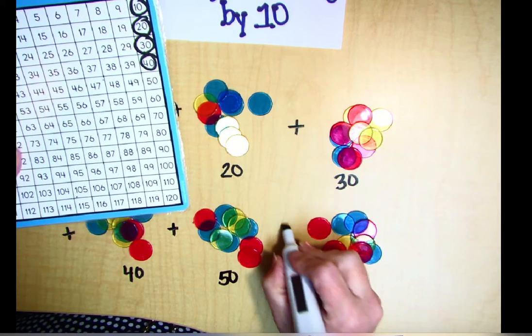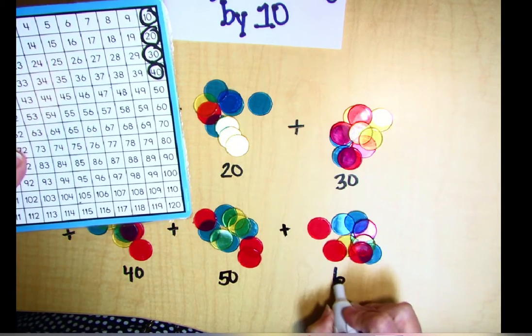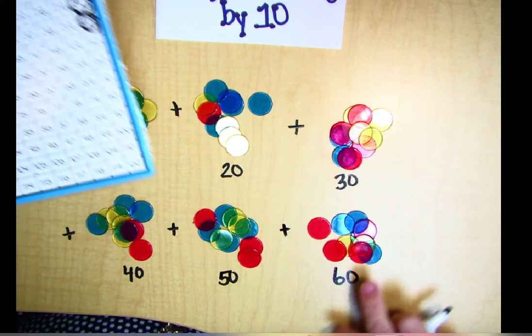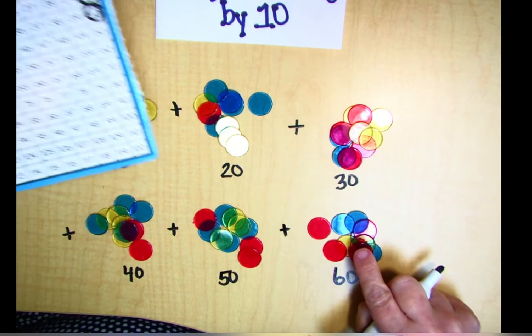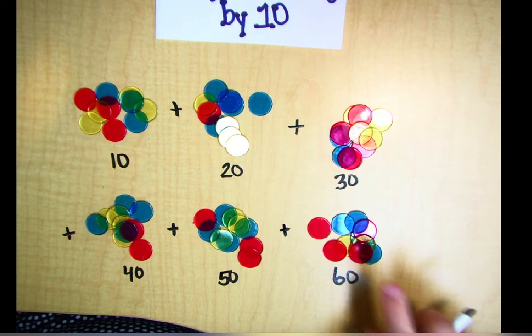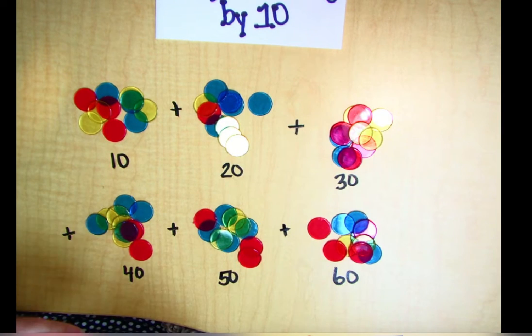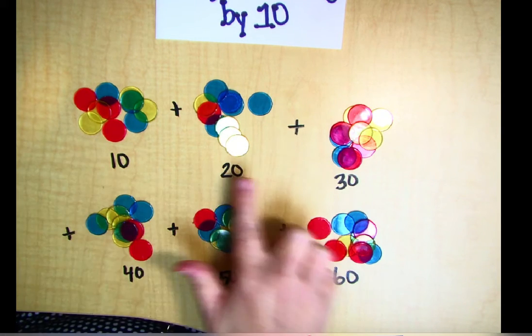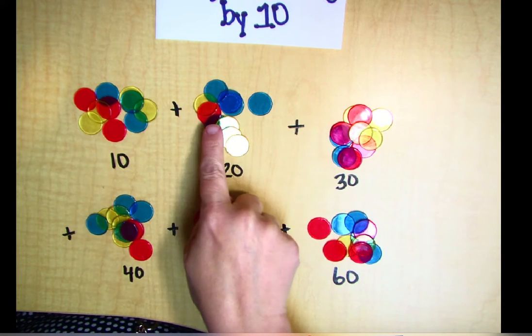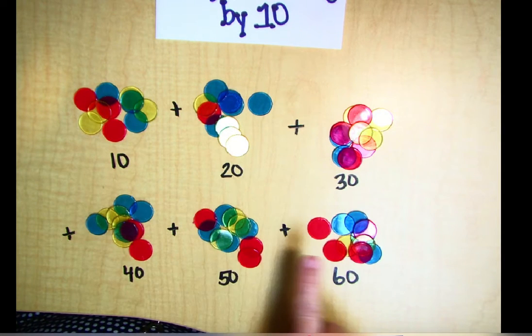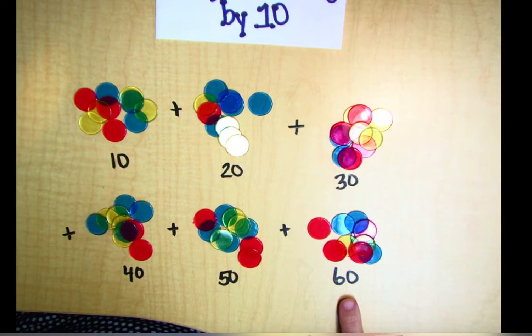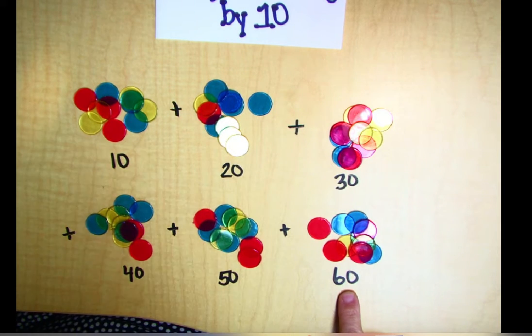And then the last one is going to be 60. Now that doesn't mean that there are 60 chips in this pile, in this particular pile. It means there's 60 chips all together because we have six groups of 10: one group, two group, three group, four group, five groups, and six groups of 10. So all together that's going to be 60 chips.